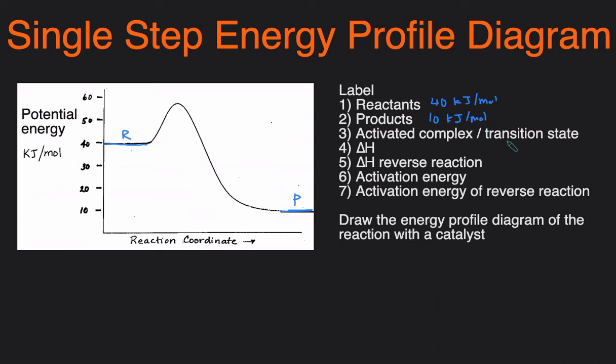The activated complex and transition state, these are interchangeable and they will be found at the very peak of the curve. So this is where the activated complex and transition state is, and that has a potential energy of roughly about 57 kilojoules per mole.